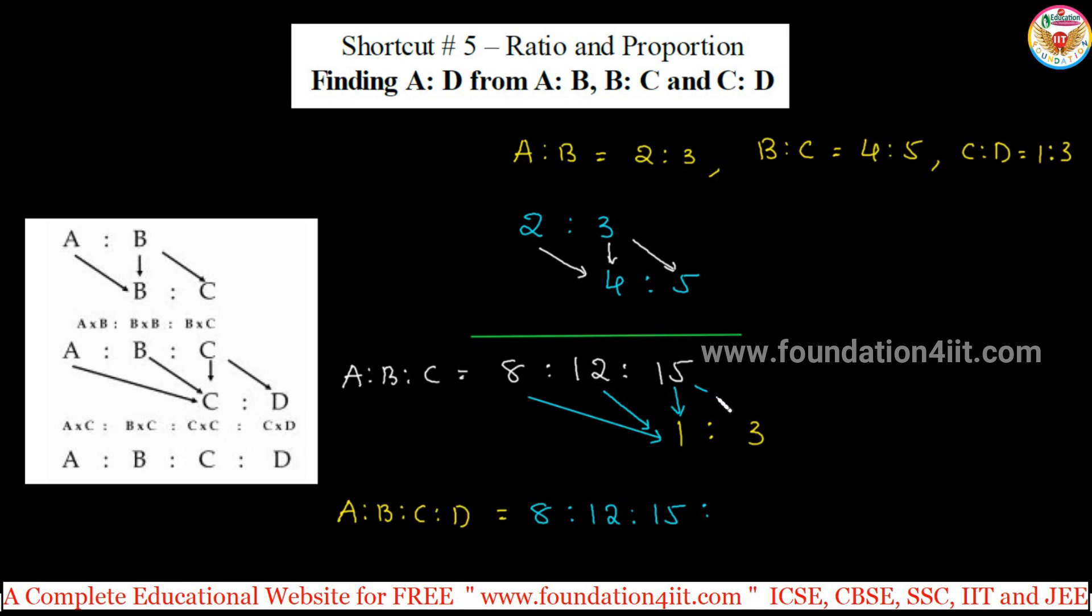Next, again with this C one more, 15 into 3 is 45. So A:B:C:D is 8:12:15:45. In order of taking like 2x, 3x or making the B ratio same or C ratio same, we can apply this rule.